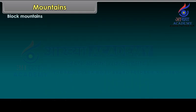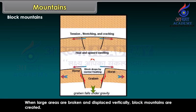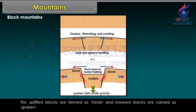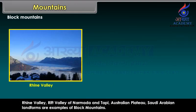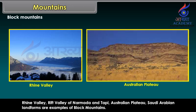Block Mountains. When large areas are broken and displaced vertically, block mountains are created. The uplifted blocks are termed as Horst and the lowered blocks are named as Graben. Rhine Valley, Rift Valley of Narmada and Tapi, Australian Plateau, and Saudi Arabian landforms are examples of block mountains.